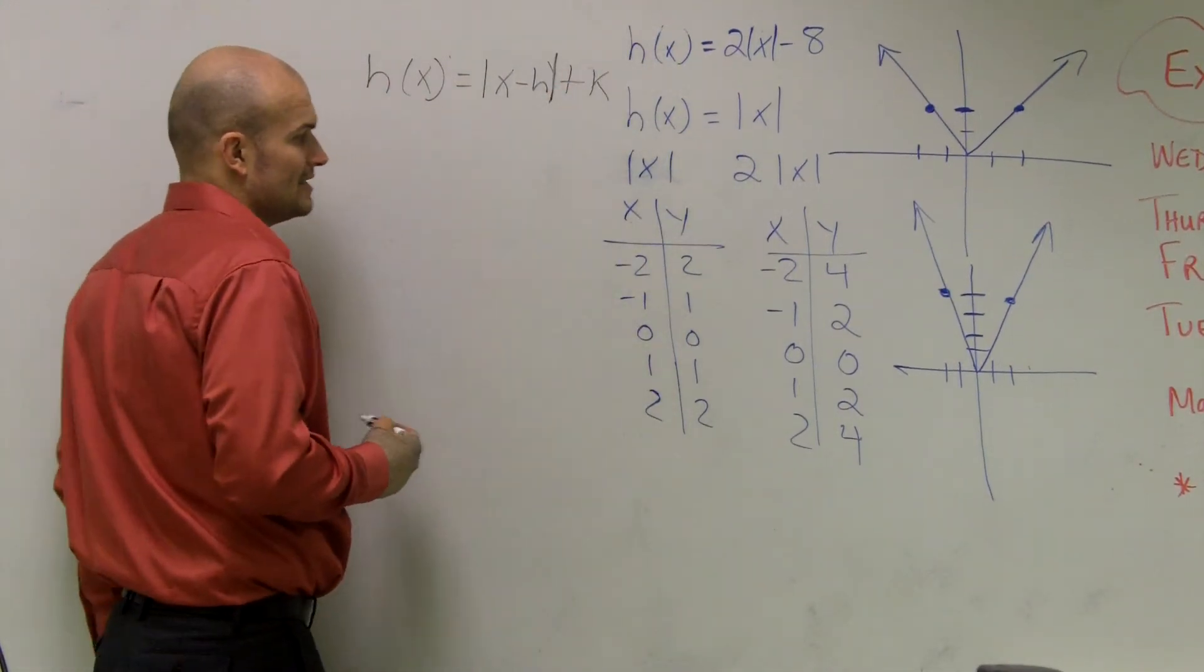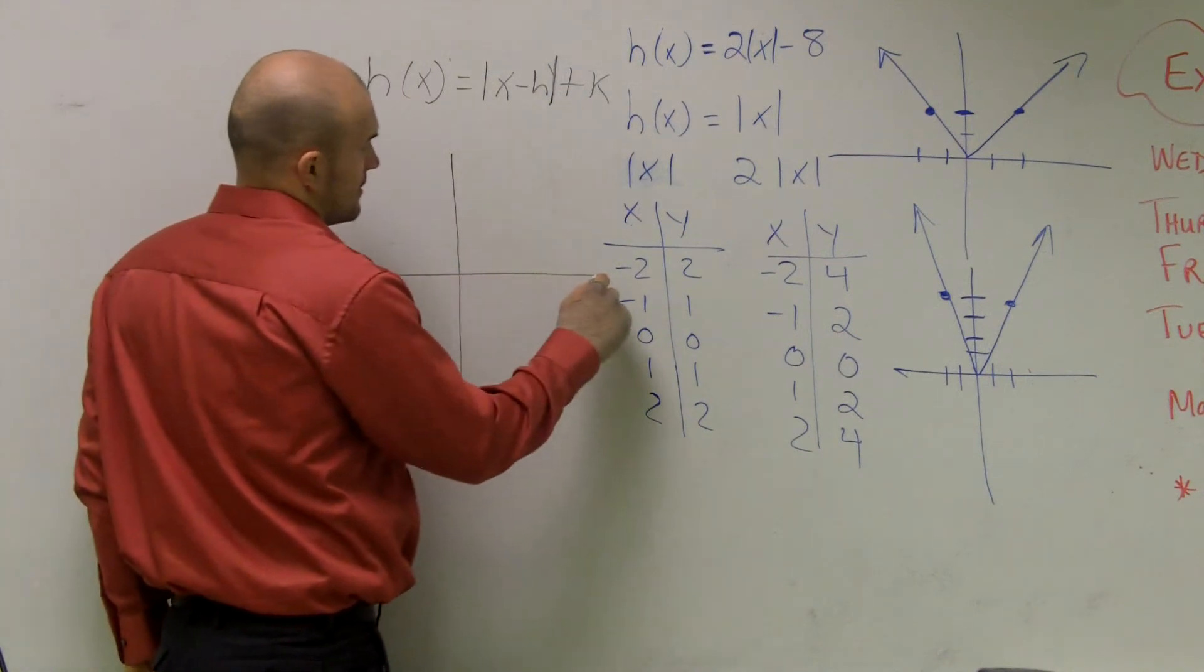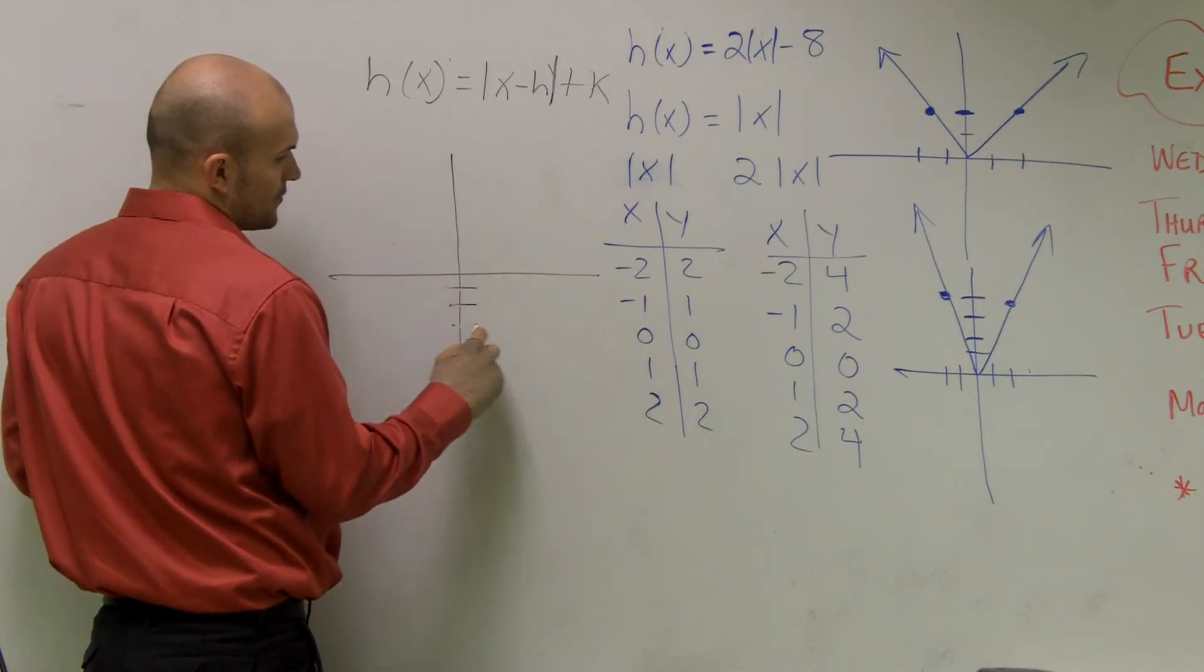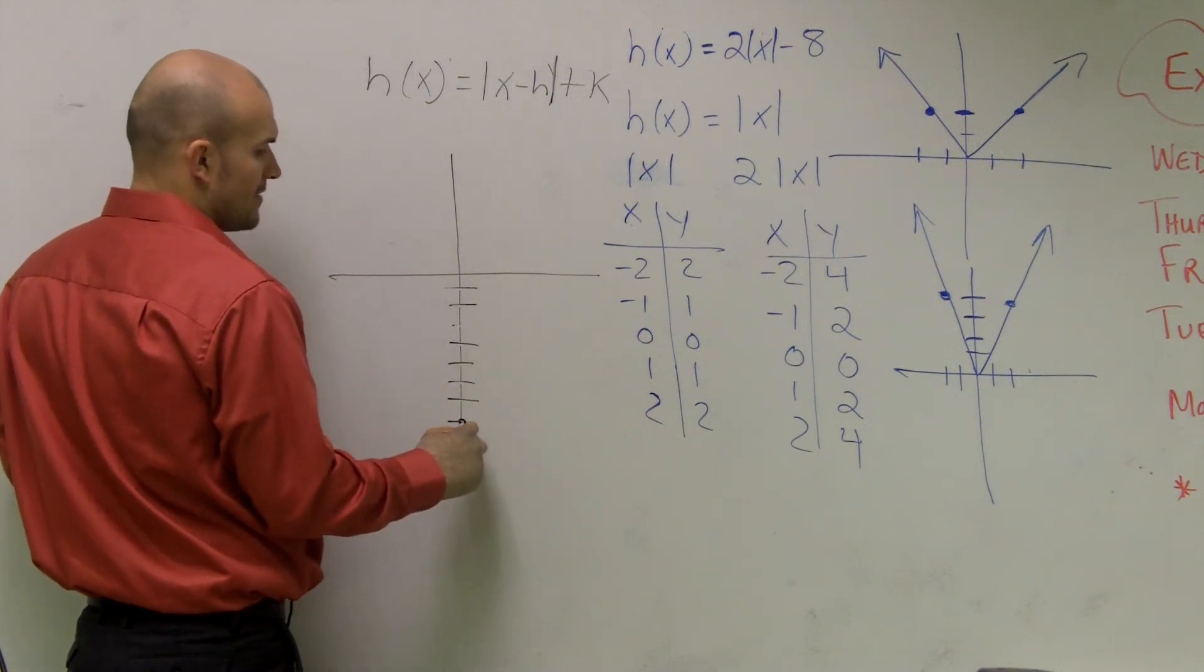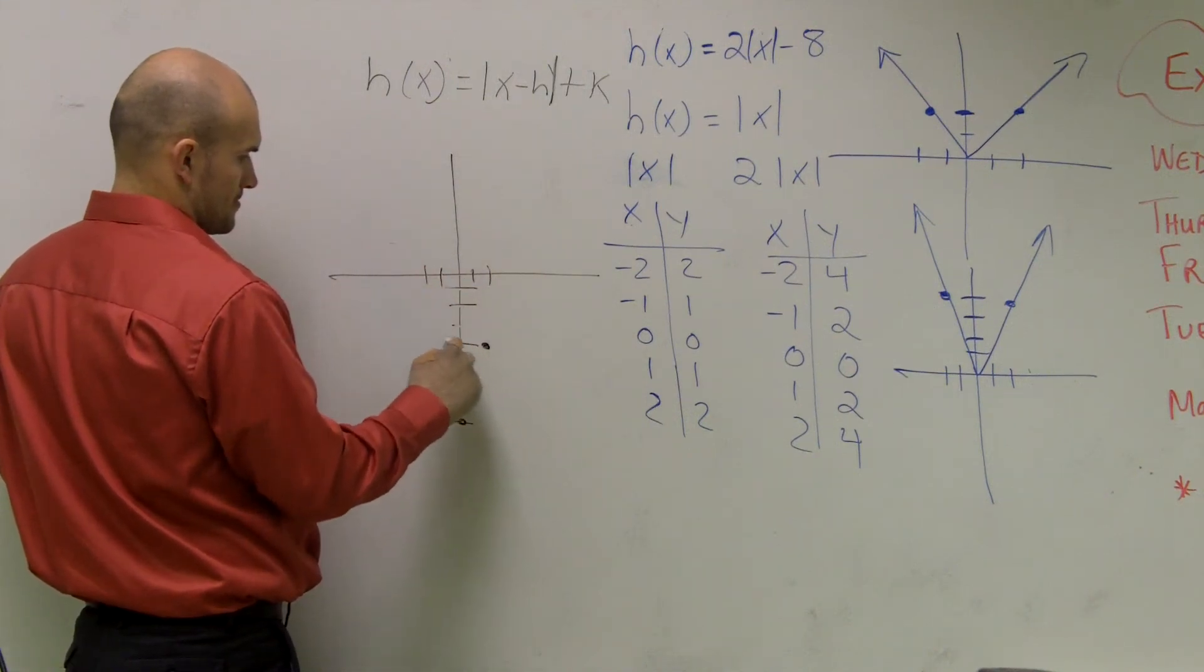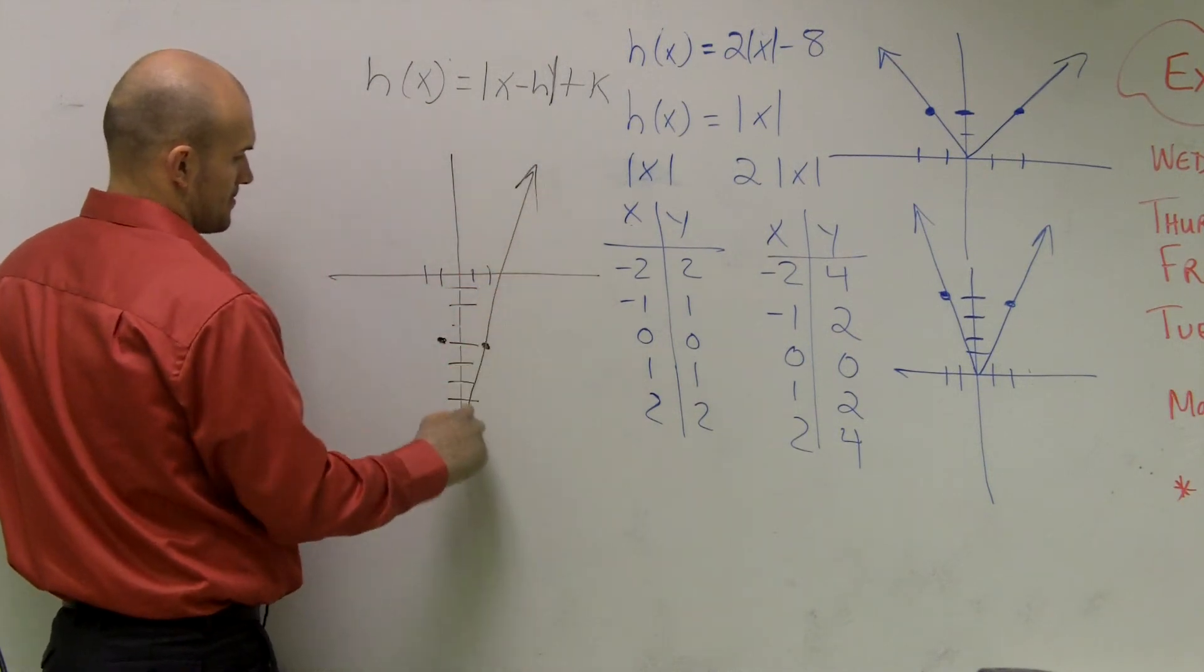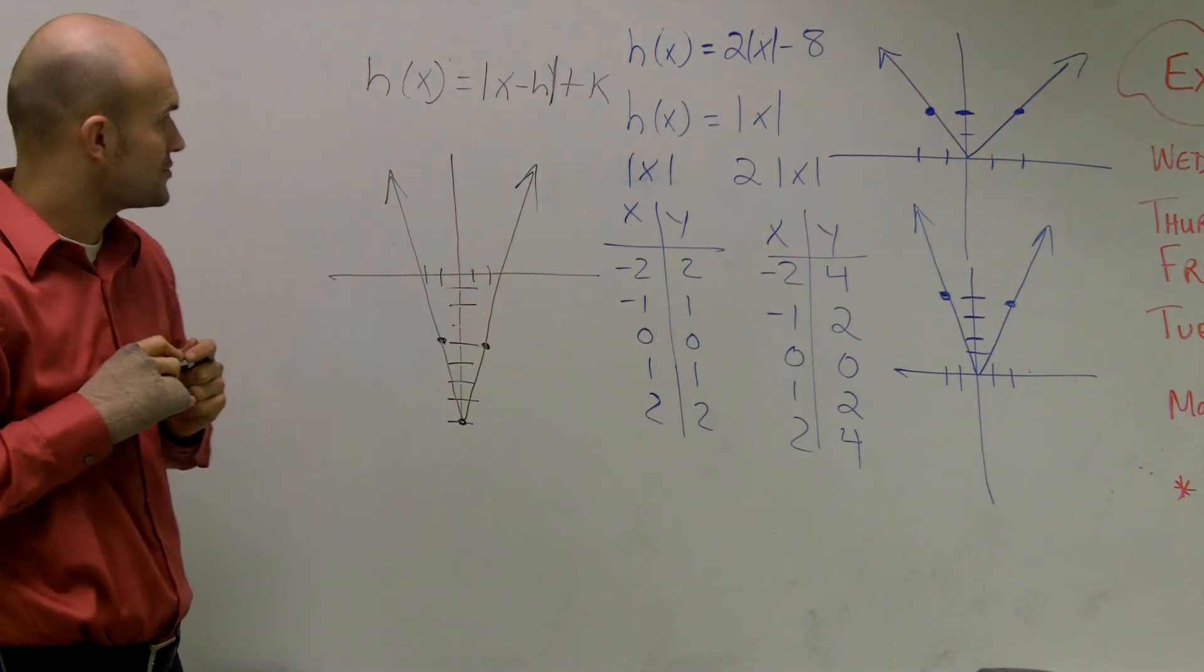So I'm going to say down 8 units. So my final graph is going to have a vertical or a horizontal compression and shifting down 8 units down. 1, 2, 3, 4, 5, 6, 7, 8. And then 2 times up 2 over 4. And there you have it. That's what your graph will look like.